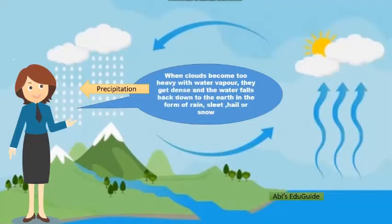What is precipitation? Precipitation is when clouds become too heavy with water vapor — they get dense and the water falls back down to the earth in the form of rain, sleet, hail, or snow.